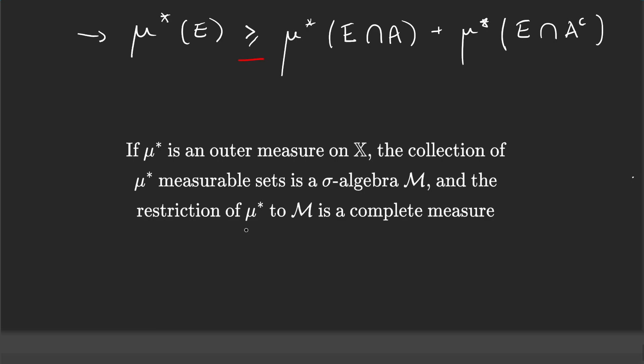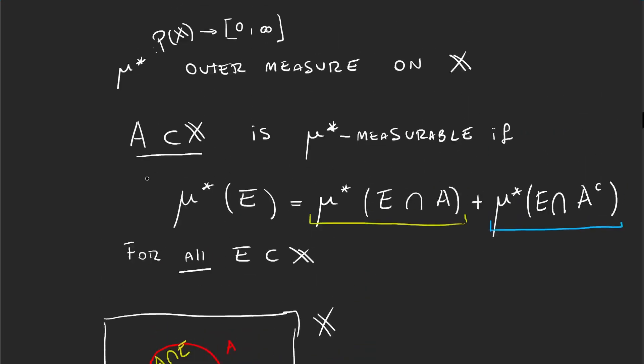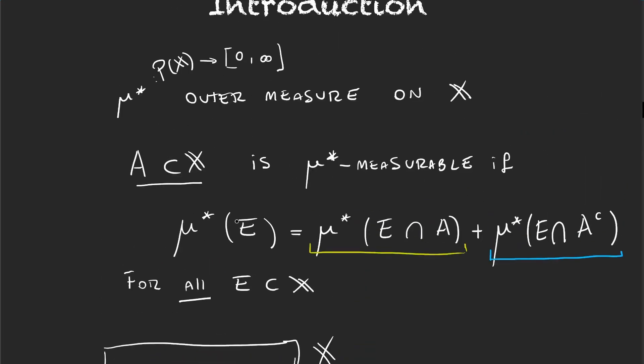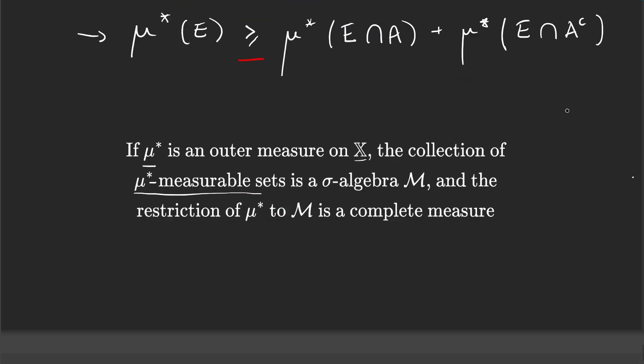Let's have a look at it. We have an outer measure μ* on a set X and we take the collection of all μ* measurable sets. So we take the collection of all the sets that satisfy this equality over here. So what the theorem is telling us is that collection of sets of μ* measurable sets is a σ-algebra.